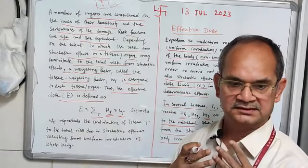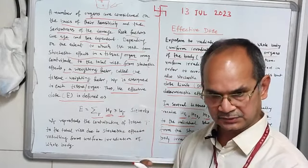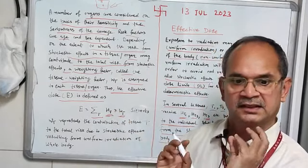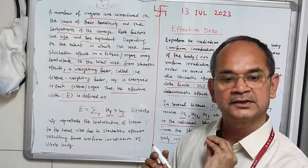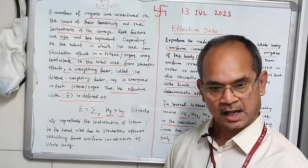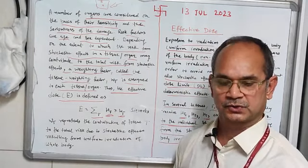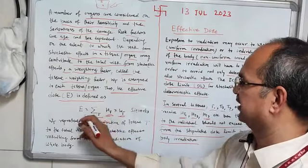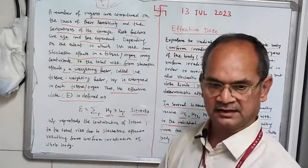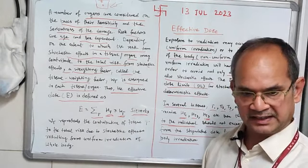For the thyroid, you take the thyroid's dose equivalent multiplied by its tissue weighting factor, then add other organs, summing all body organs together. That is how you get the effective dose. Its unit is the sievert — joule per kilogram.